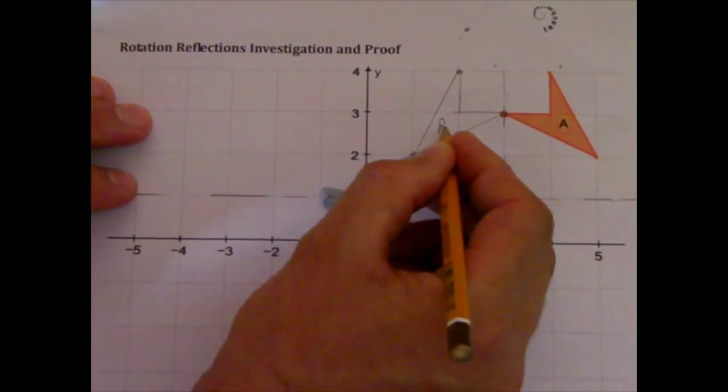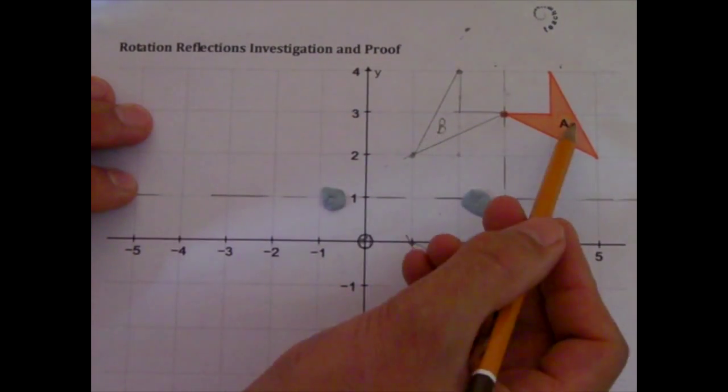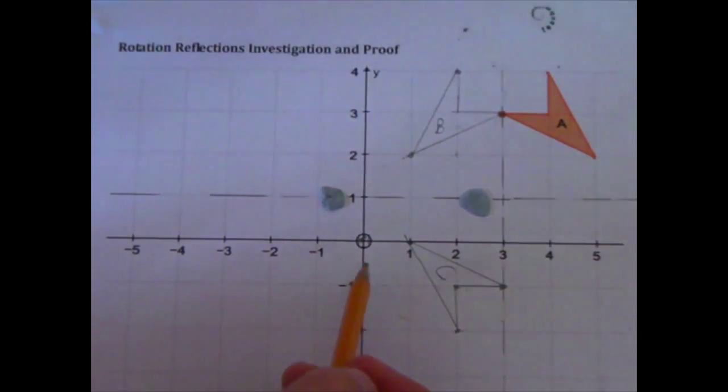That's our second image. Let's call that shape B, that one C. And the task is, how do I get from A to C, can I, using a single rotation?